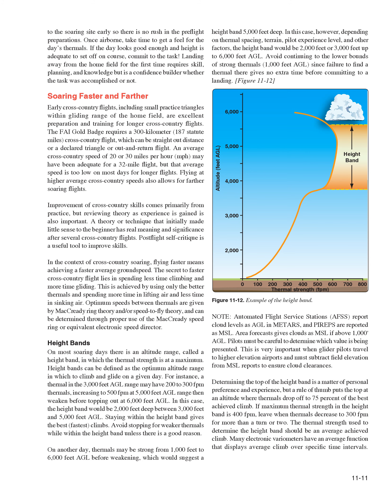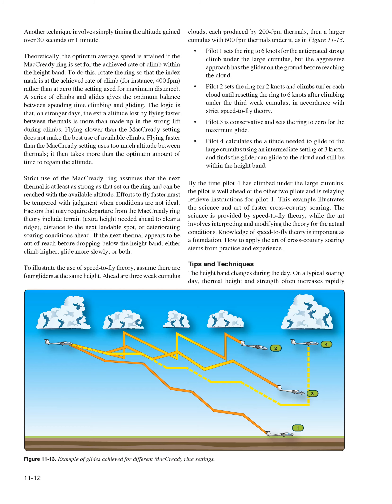Staying within the height band gives the best, fastest climbs. Avoid stopping for weaker thermals within the height band unless there is a good reason. The top of the height band is where thermals drop off to 75% of the best-achieved climb—if maximum thermal strength is 400 FPM, leave when thermals decrease to 300 FPM for more than a turn or two. Avoid continuing to the lower bounds of strong thermals at 1,000 feet AGL, since failure to find a thermal there gives no extra time before committing to a landing. Many electronic variometers have an average function displaying average climb over specific time intervals.